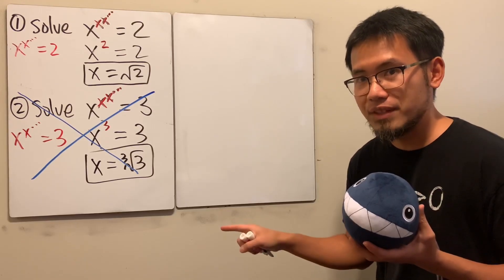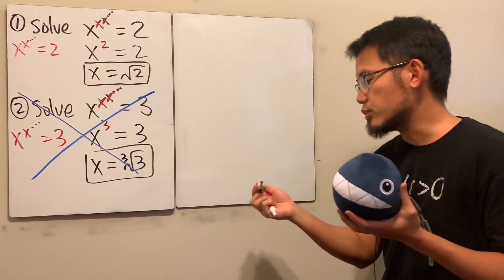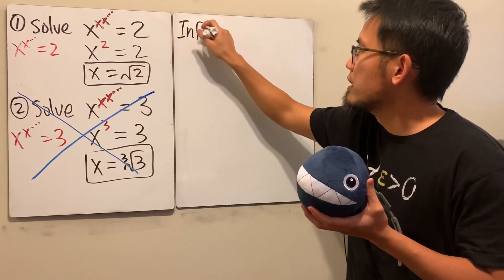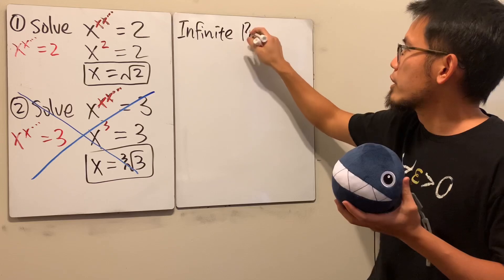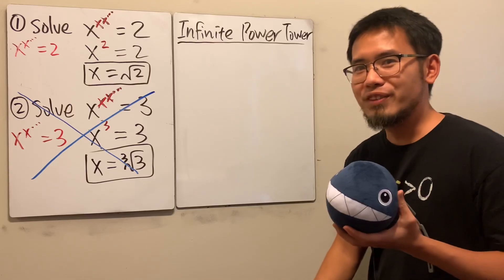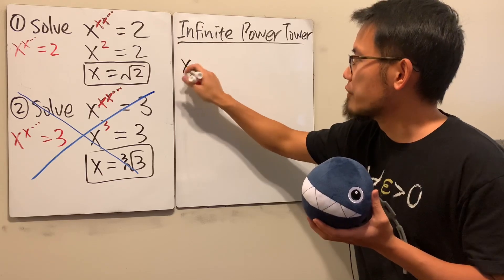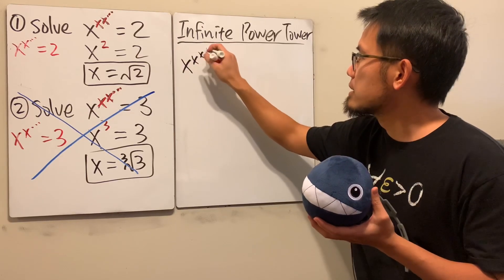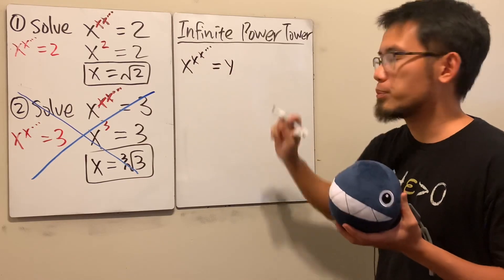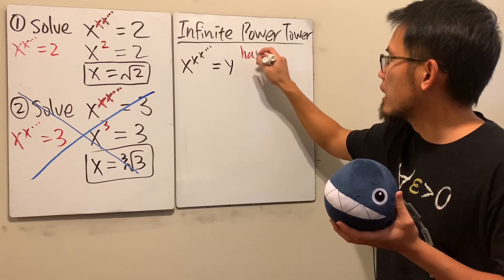Let's talk about why this has a solution and this does not. This is called the infinite power tower because we have infinitely many x infinite, and we're talking about power, and we have a tower. This is really famous, the infinite power tower. Let me show you this. Suppose you want to solve the equation x to the x to the x dot dot dot forever equals y. I will tell you, you can only solve this if it has a solution.